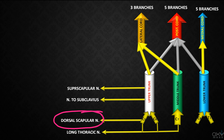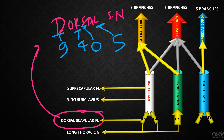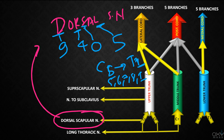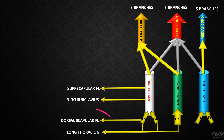Now take the dorsal scapular nerve. The coding for D is 9, for R is 4, for S is 0, and for L is 5. Since our brachial plexus starts from C5 and ends at T1, the valid numbers are 5, 6, 7, 8, and 1. Within these, there is no 9, 4, or 0 — only 5 is present. So the word 'DORSAL' itself reminds you that its root value is C5. Take only the L for making the code, and its code is 5.